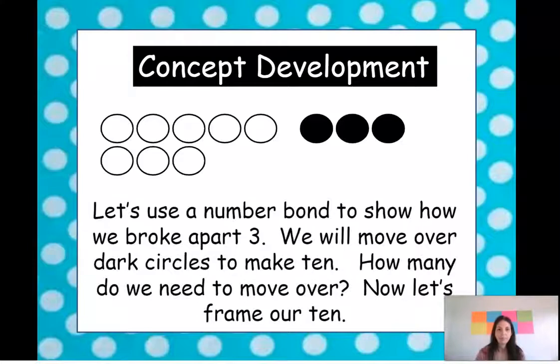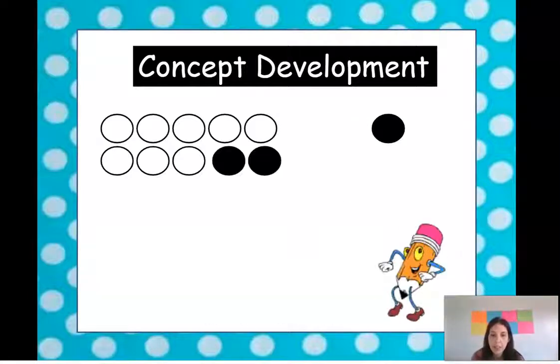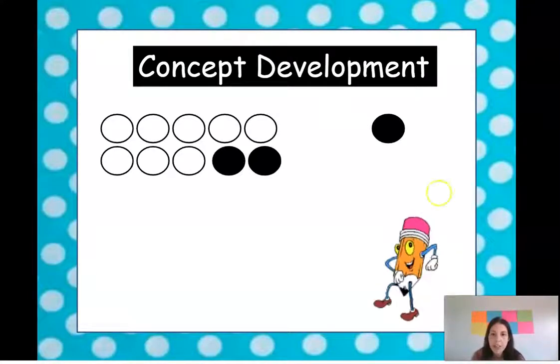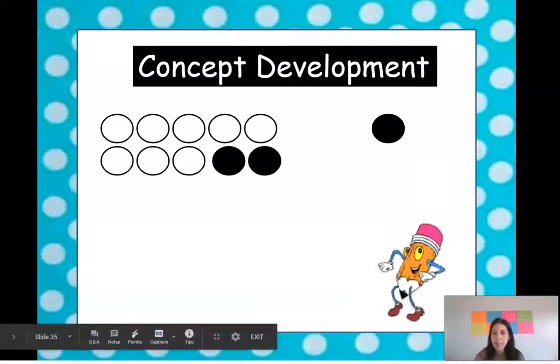Let's look at this one. Oh we're still using the same number. Let's use a number bond to show how we broke apart three. We'll move over dark circles to make ten. Okay so let me show you guys a number bond to show what we did there.